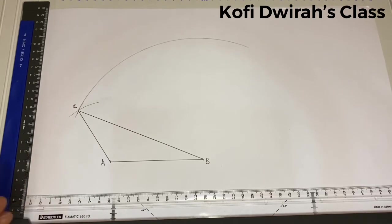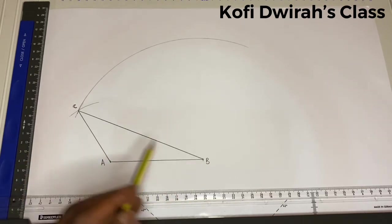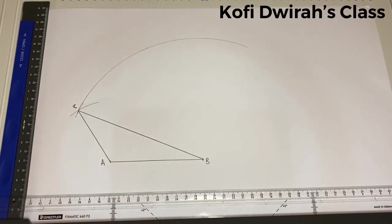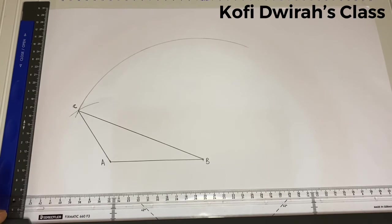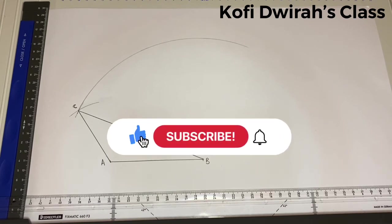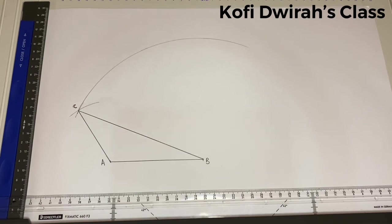It's a triangle with different side sizes: AB is 10 centimeters, BC is 15 centimeters, and AC is 7 centimeters. This is how to construct a scalene triangle. Thank you very much for watching. Please don't forget to subscribe, share, and like. See you in the next class. Bye!